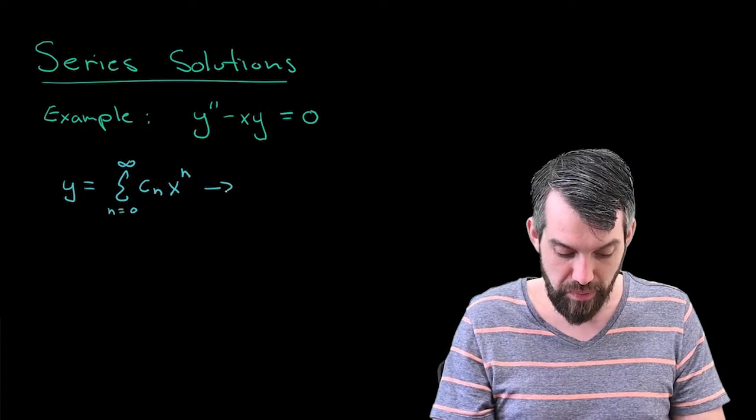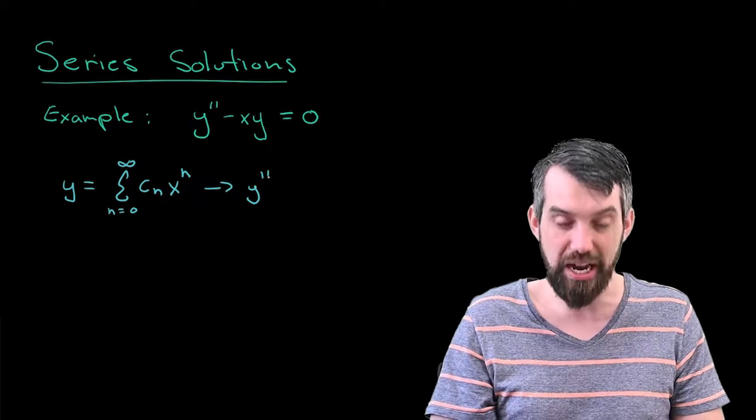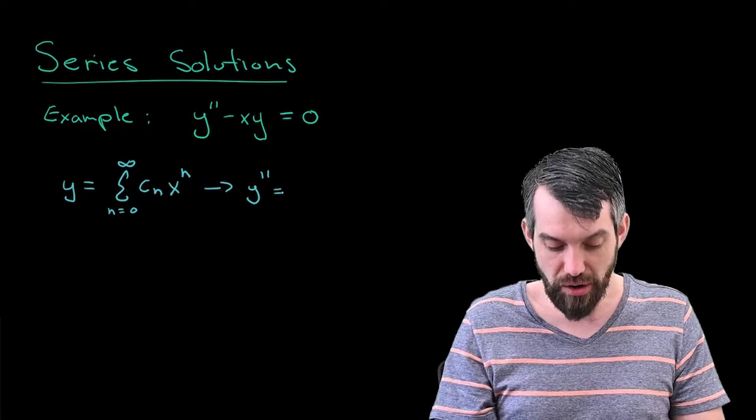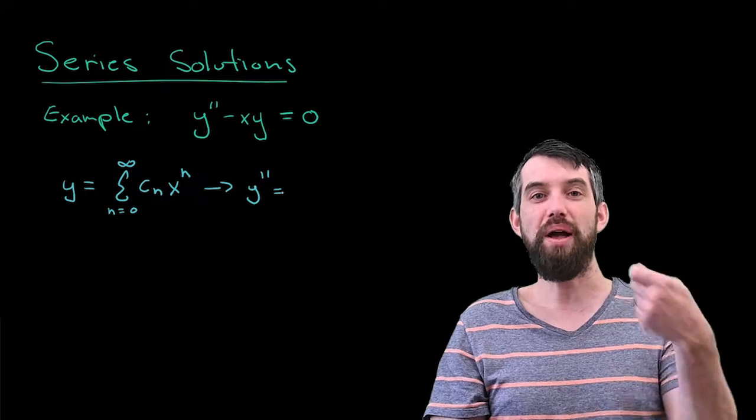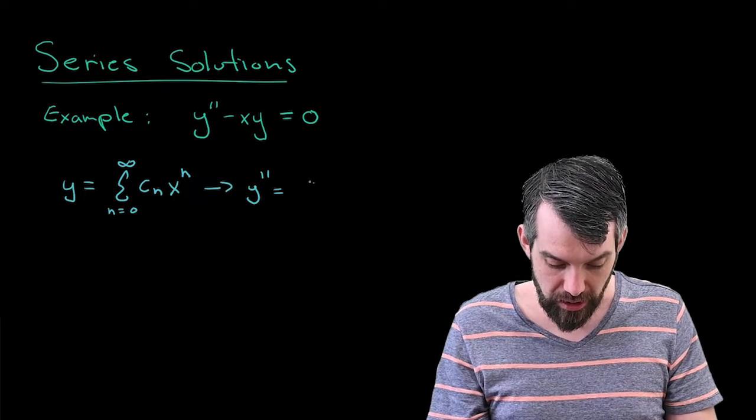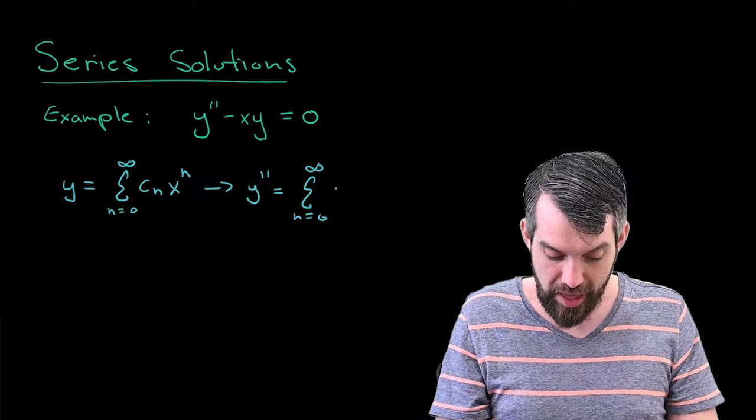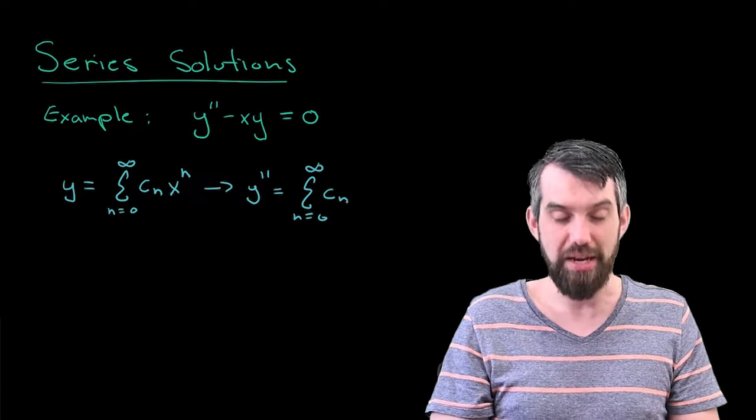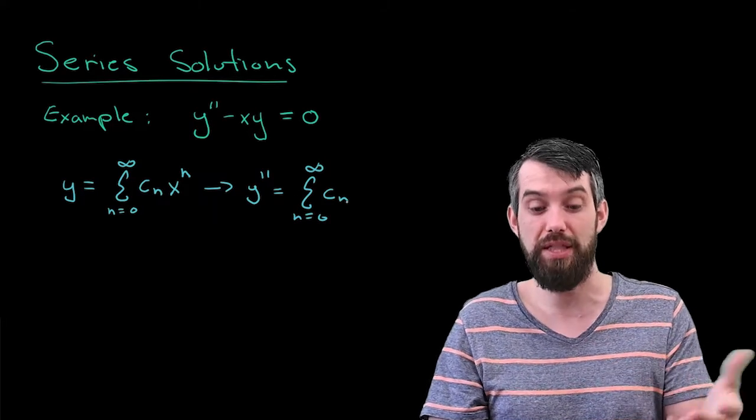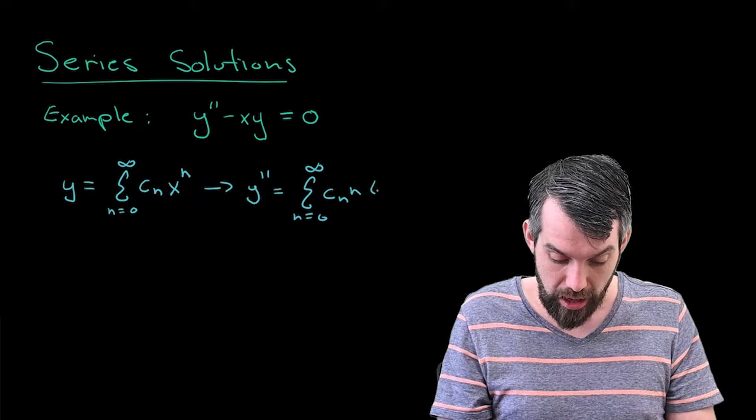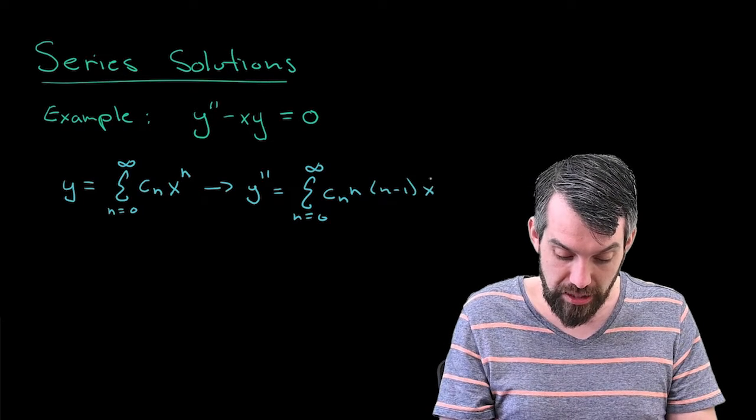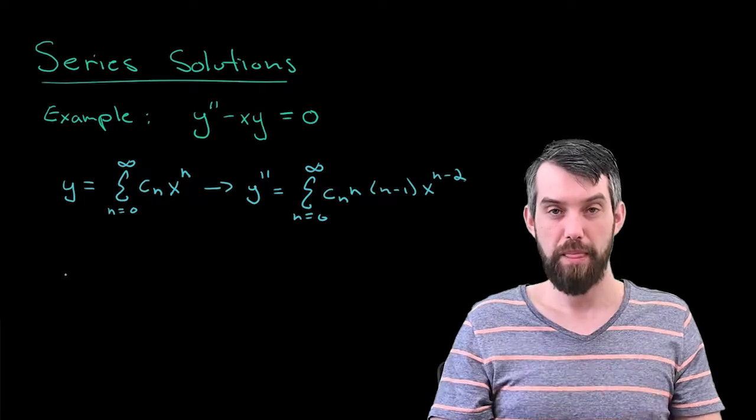If you had checked out the previous video on this series where we talked about when can we expect solutions of this form, you'll note that the coefficients of y prime, which is zero, and the coefficients of y, which are just x, so these coefficient functions are either zero or just x. So both of them are what we had described as being analytic.